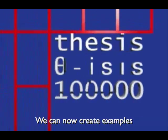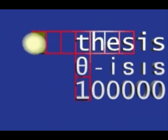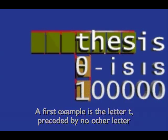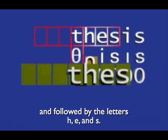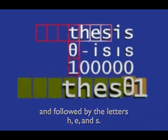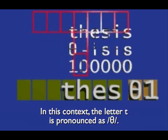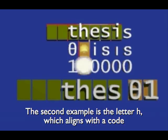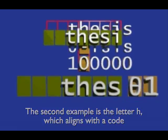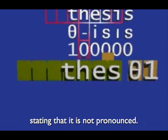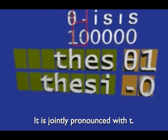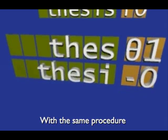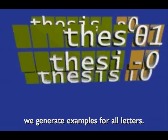We can now create examples to be stored in memory. A first example is the letter t, preceded by no other letter and followed by the letters h, e, and s. In this context, the letter t is pronounced as "the". The second example is the letter h, which aligns with the code stating that it is not pronounced — it is jointly pronounced with t. With the same procedure we generate examples for all letters.